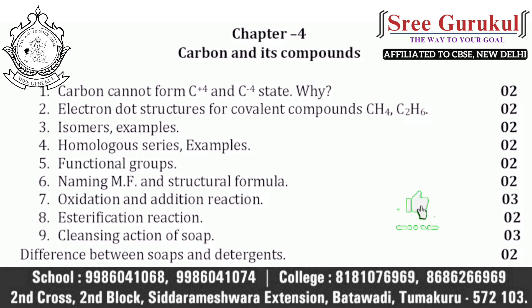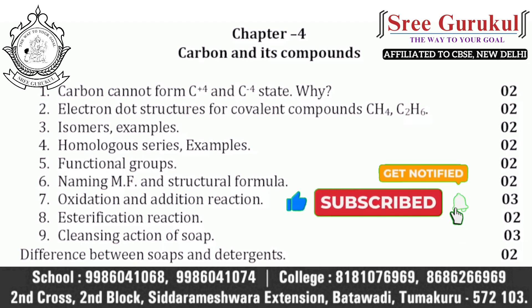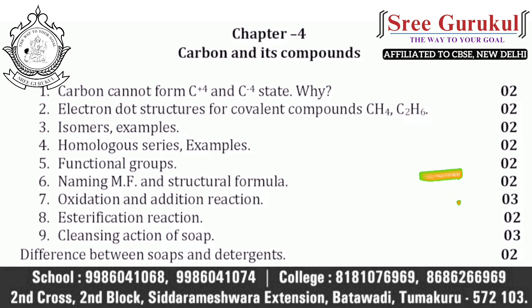Chapter four is Carbon and its Compounds. Expected questions include: why carbon cannot form C⁺⁴ and C⁻⁴ states — a very repeated two-mark question — and writing electron dot structures for covalent compounds such as hydrogen, oxygen, nitrogen, ammonia, water, CO₂, methane, and ethane. You must practice all dot structures. Also read definitions and examples of isomers, homologous series, and functional groups.